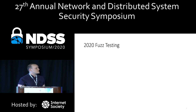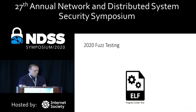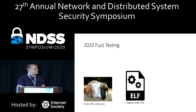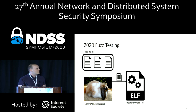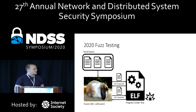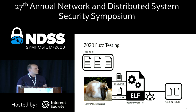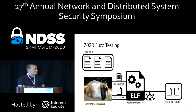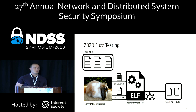Since then, fuzz testing has evolved into a sophisticated form of offline analysis that runs in parallel to the software development life cycle, where a fuzzer takes a given program under test and tries to automatically execute it until it can crash the program and produce test cases as evidence of memory corruption bugs in the original program.